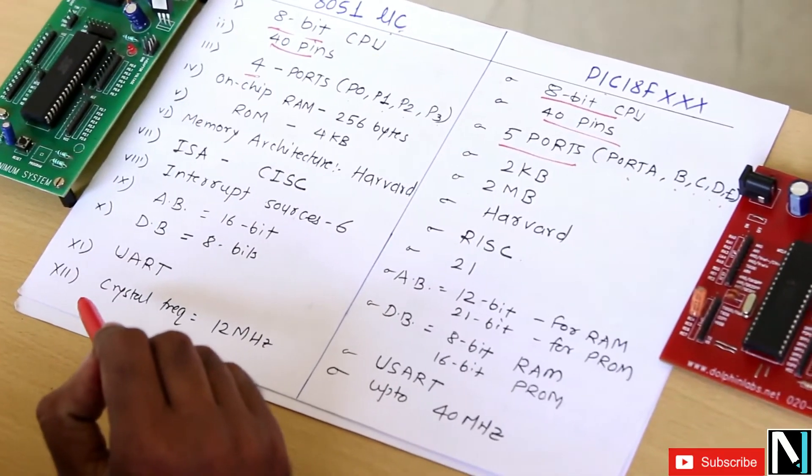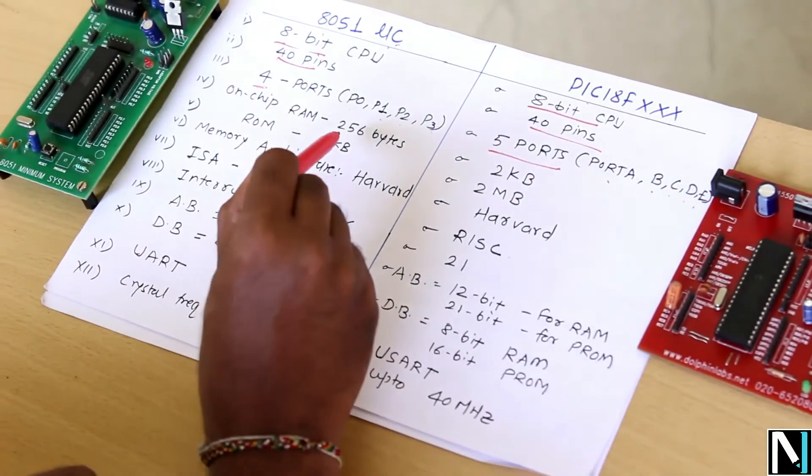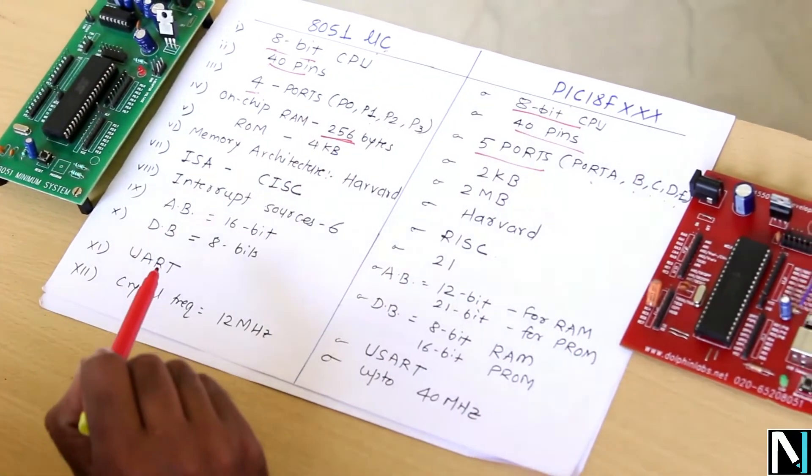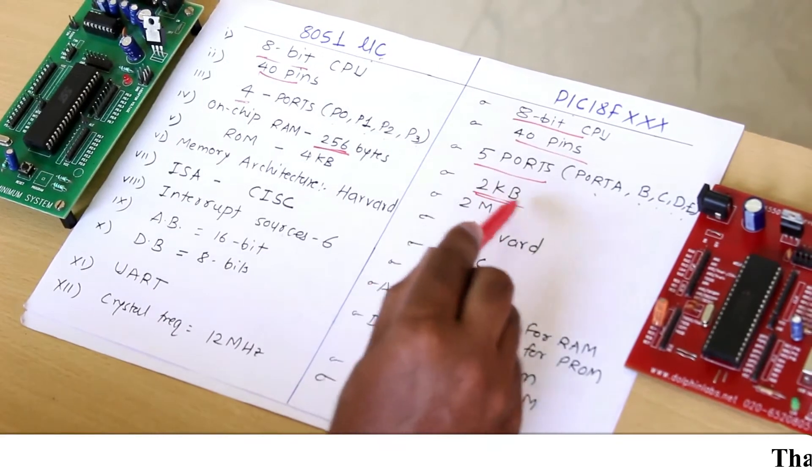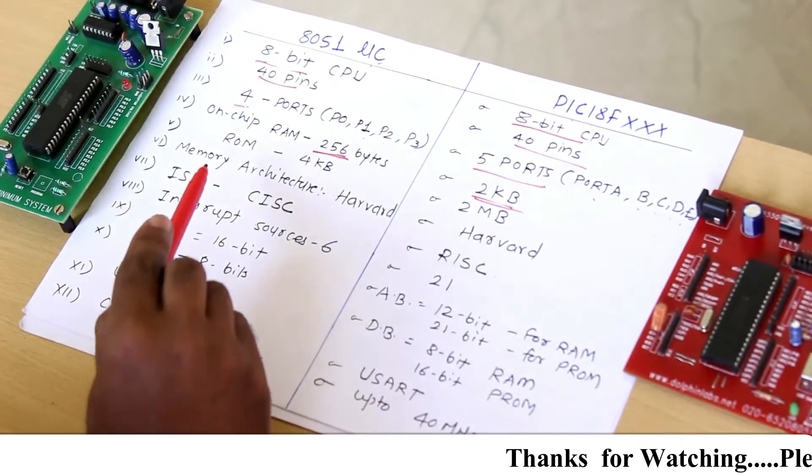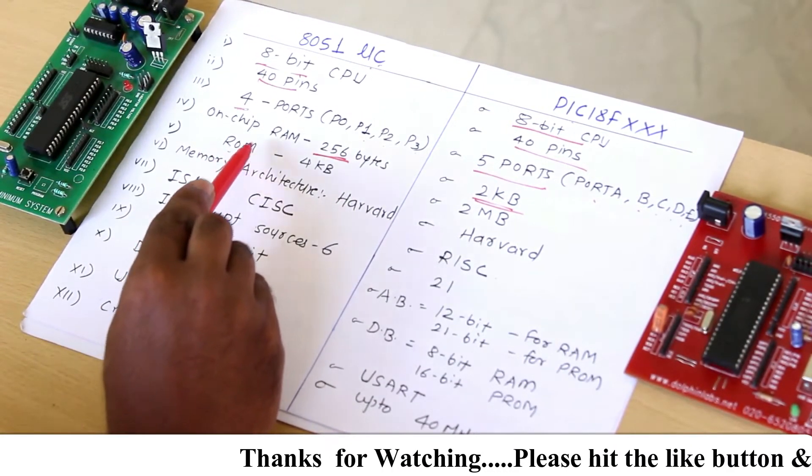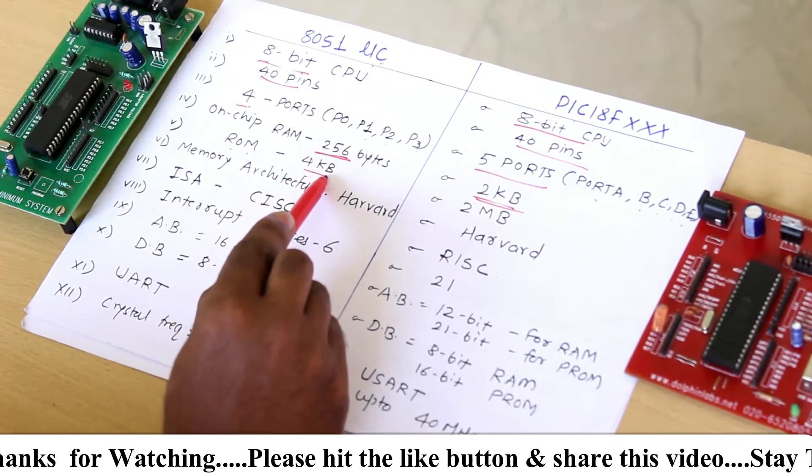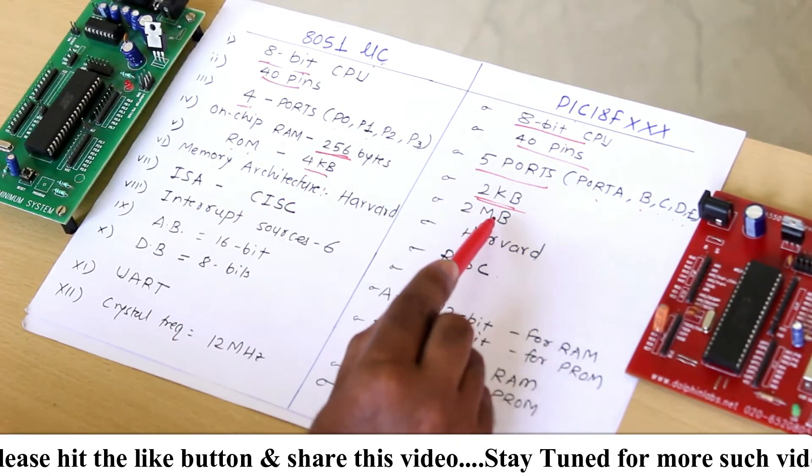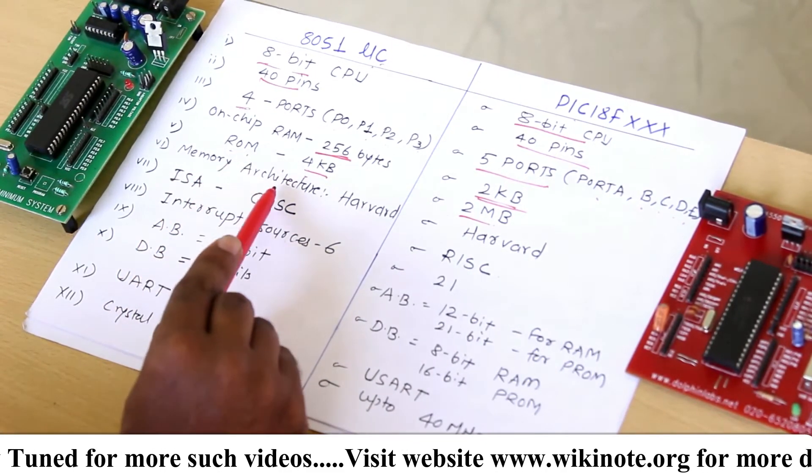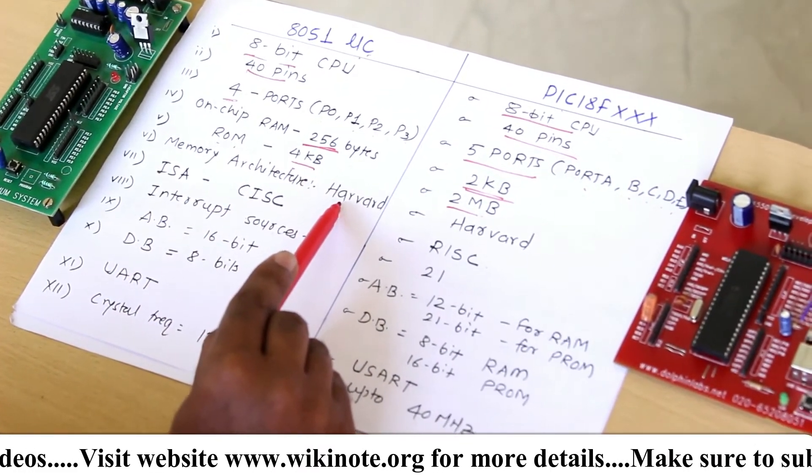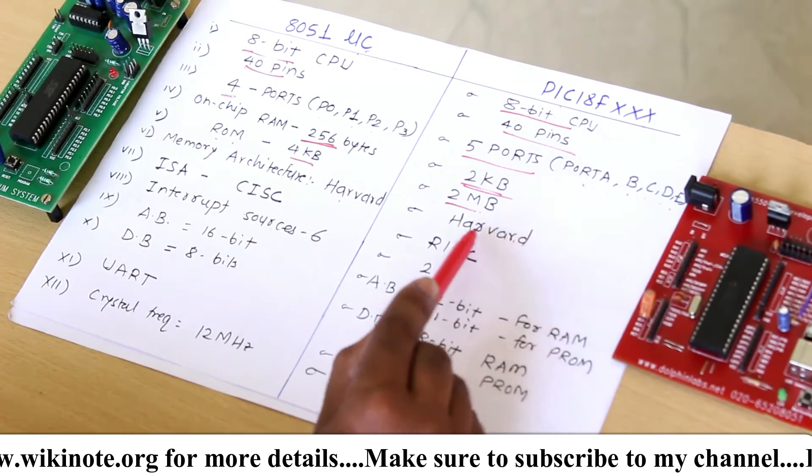If you compare the on-chip RAM of the 8051 microcontroller, it has 256 bytes of on-chip RAM, while PIC 18 has 2 kilobytes of on-chip RAM. On-chip programmable ROM for 8051 microcontroller is 4 kilobytes, while in PIC 18 it's up to 2 megabytes. The memory architecture which is used is Harvard here, and in case of PIC 18 is also Harvard.